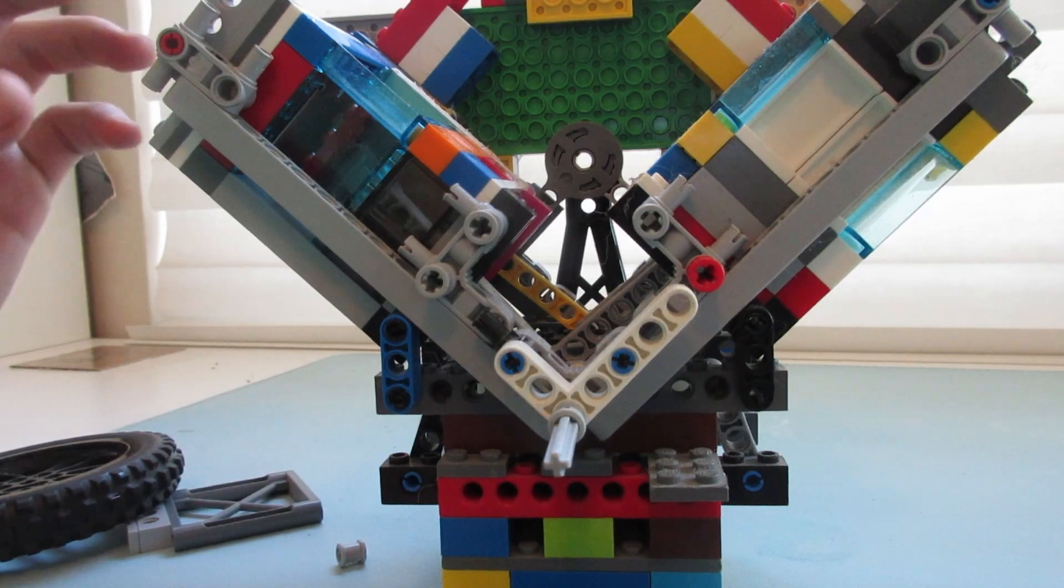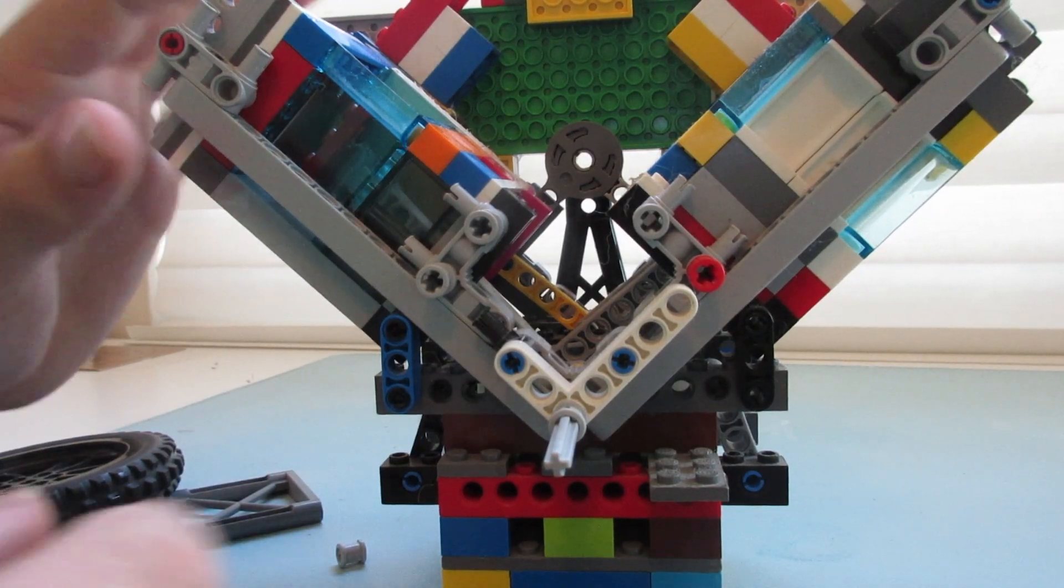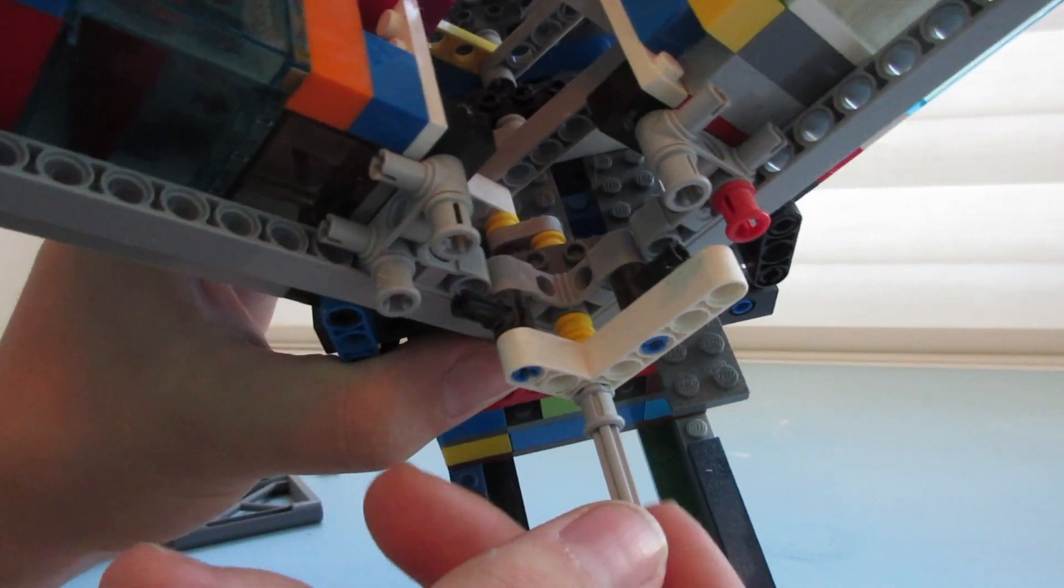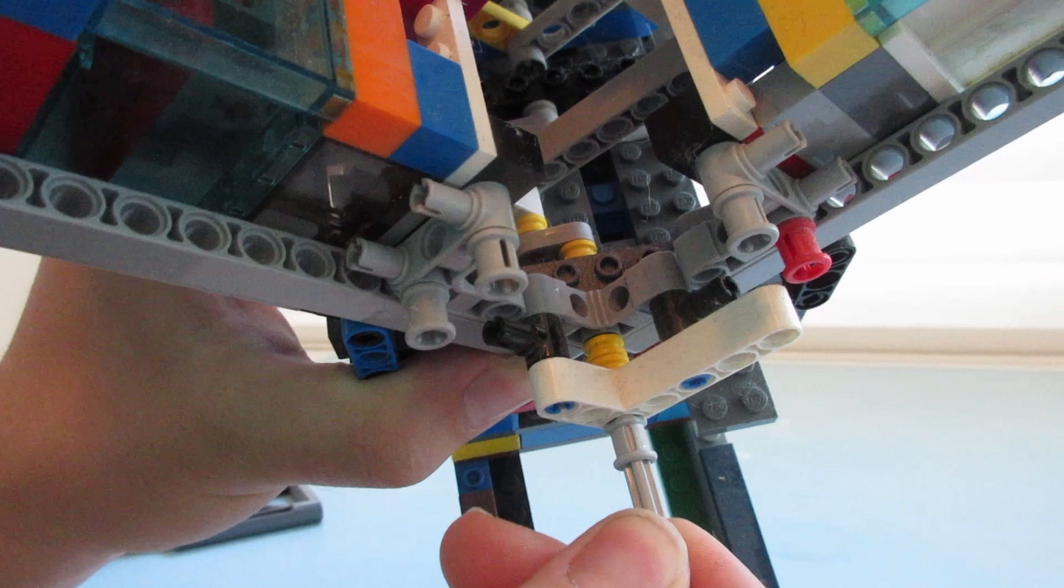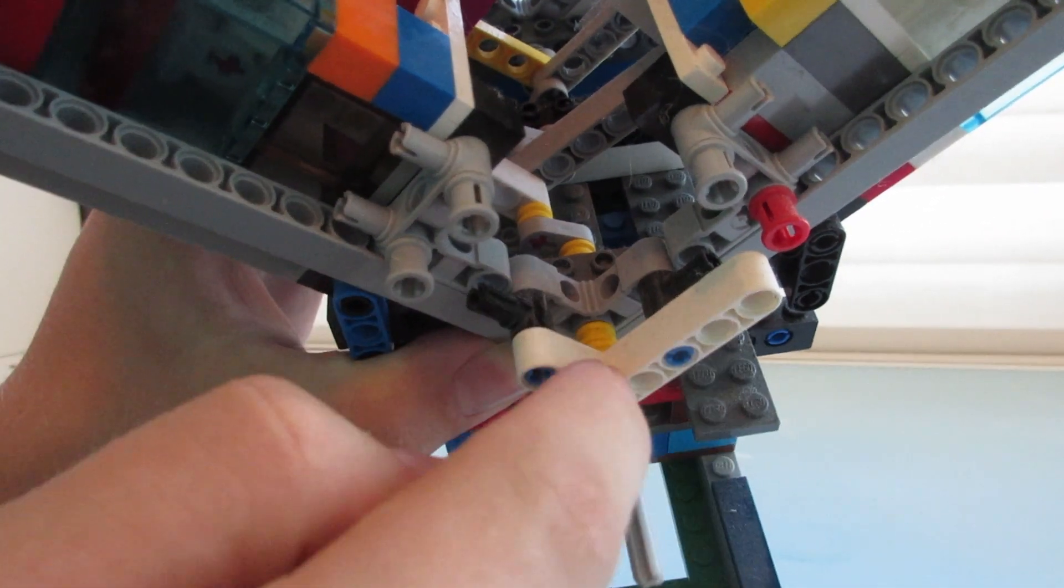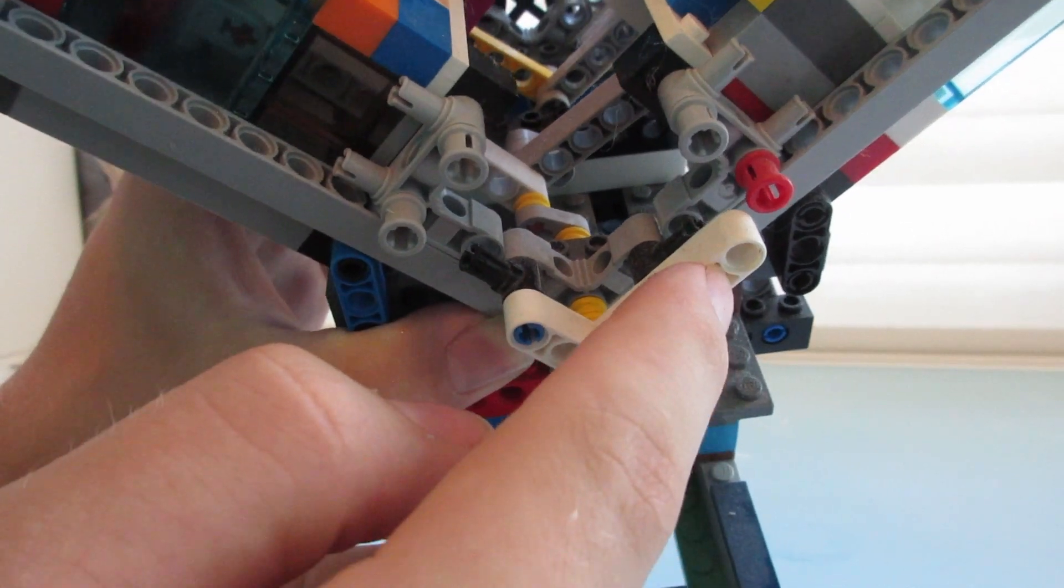I went really overboard for the structural integrity of this build. As you can see, we have this L piece right here which acts as the catch for when you pull the wheel off. It won't actually pull the rest of the internals out. It's got those little pins right there.